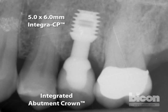The key to evaluating the integrated abutment crown radiographically is that it has a hemispherical base. As you can see, the hemispherical base — the titanium — is in contact with the bone, and not the indirect composite.